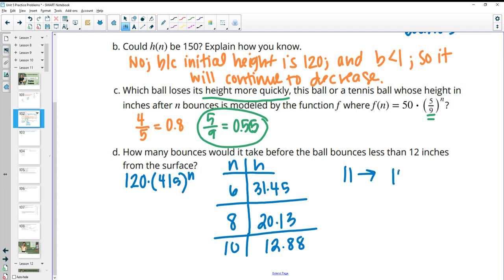which is really close. So now if we go ahead and plug in 11, 11 will kick back 10.31 inches. So this tells us it's at 12.9 inches after 10 bounces. On the 11th bounce, it's going to be at 10.31. So 11 bounces to get below 12 inches.